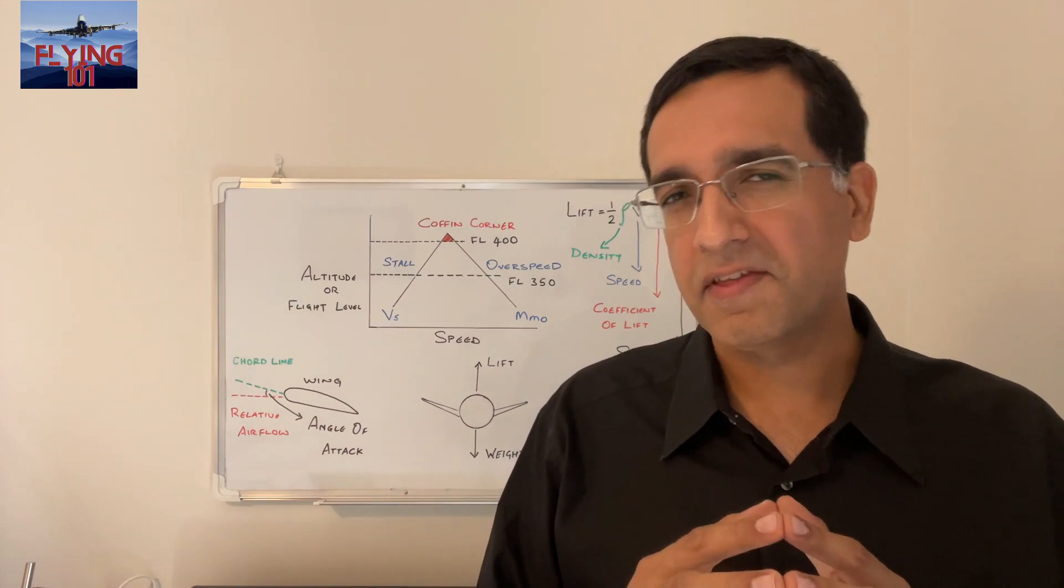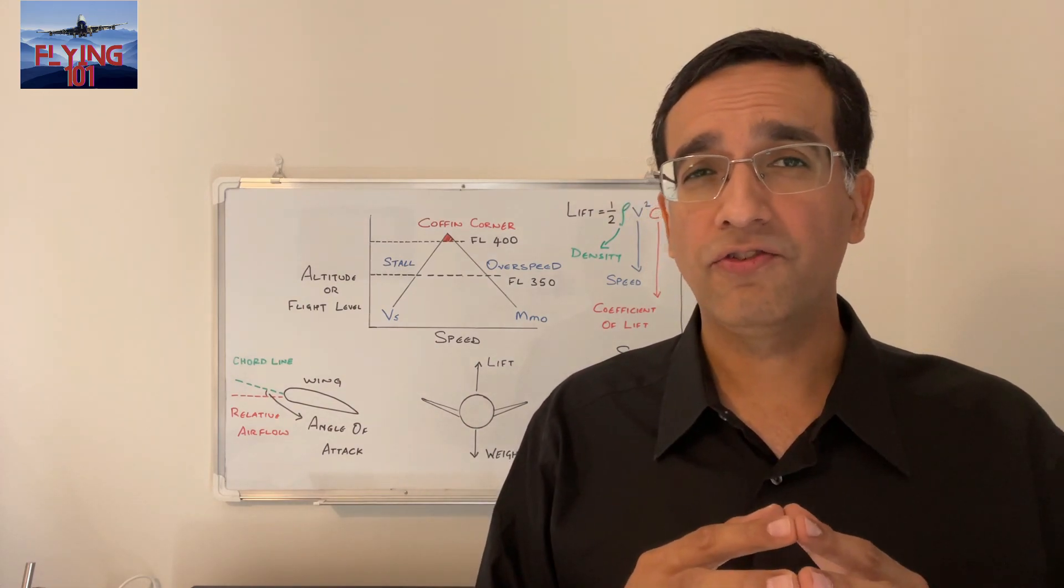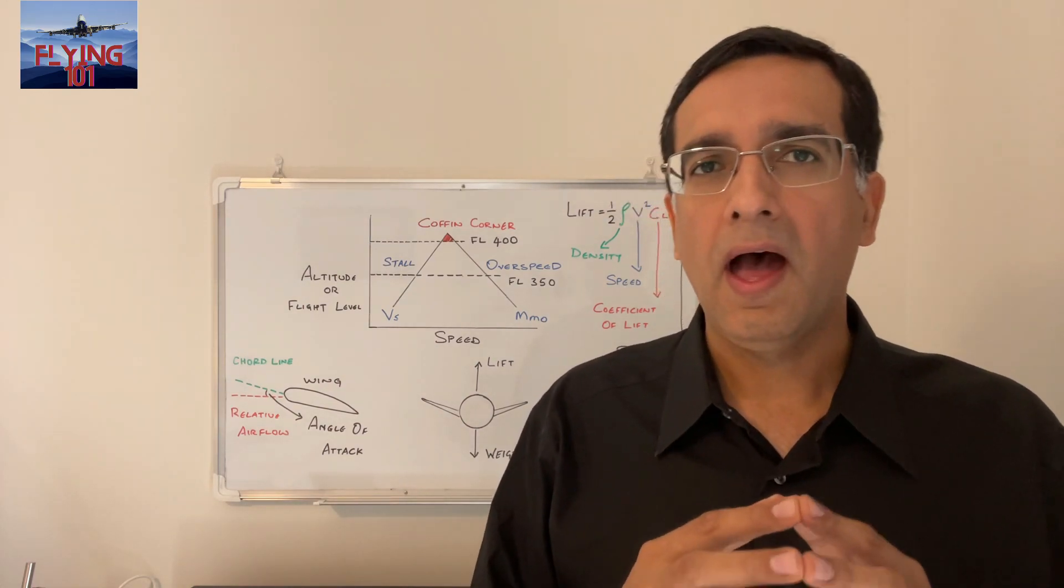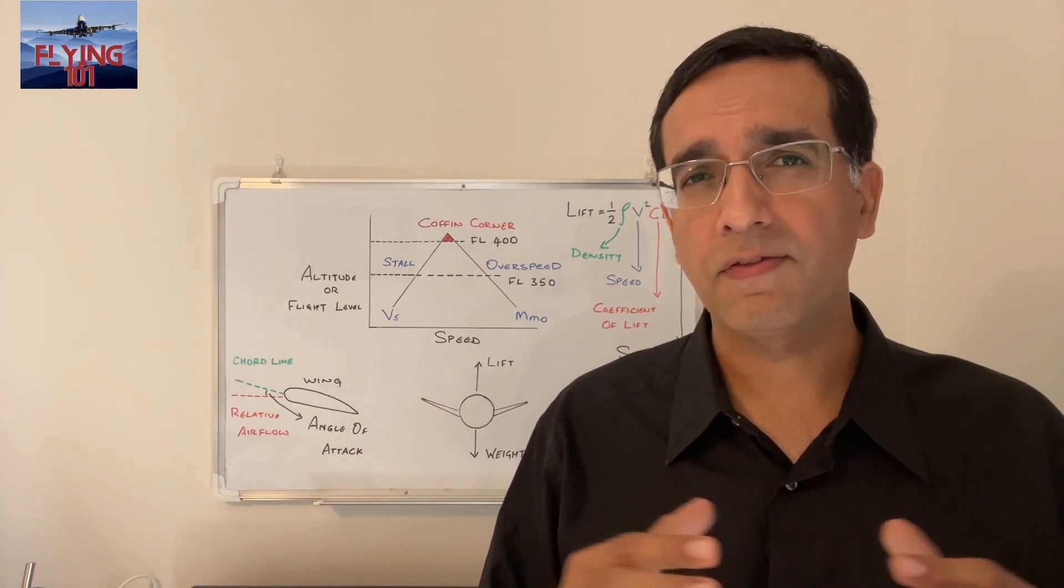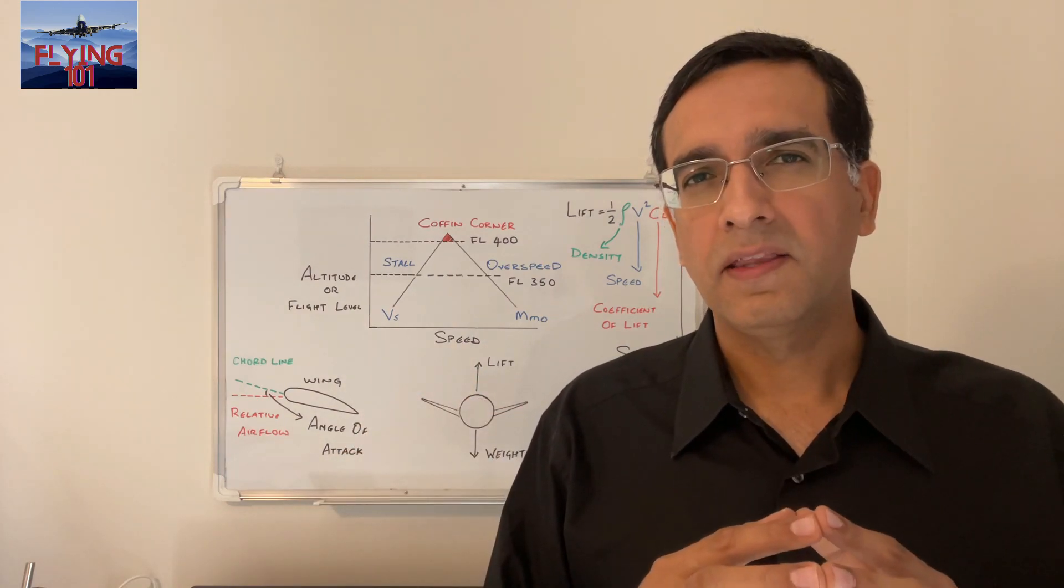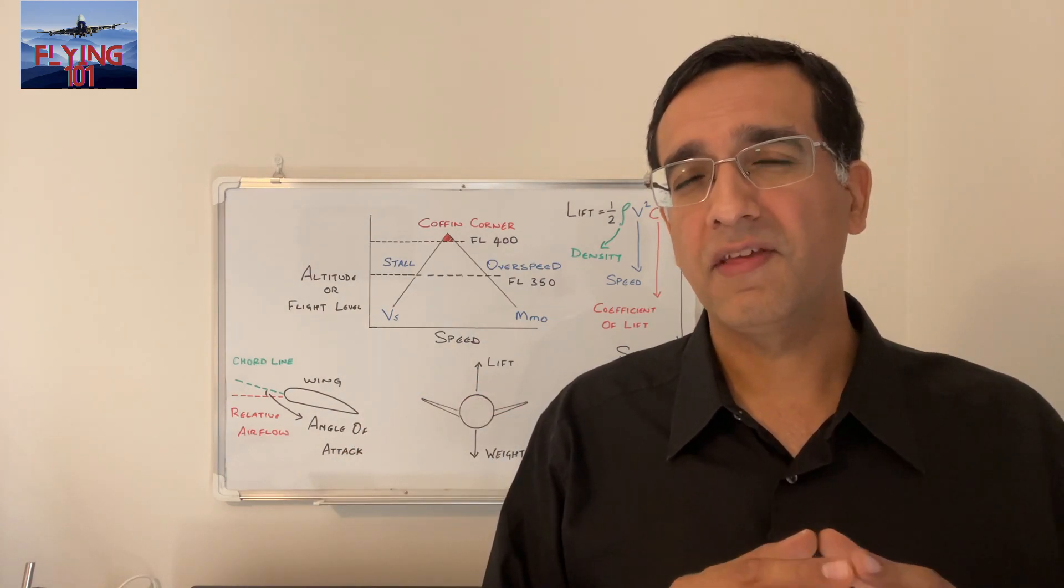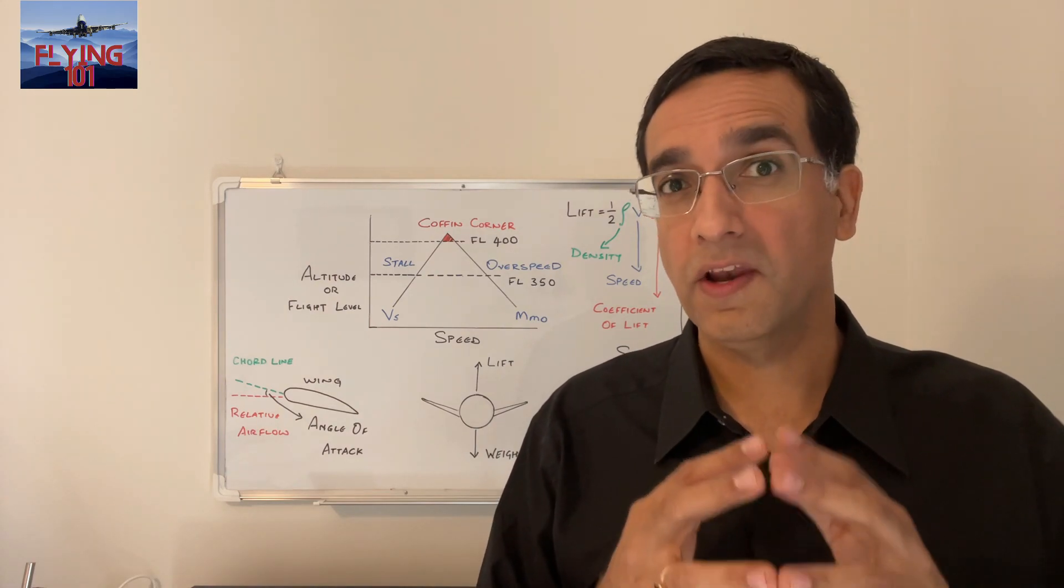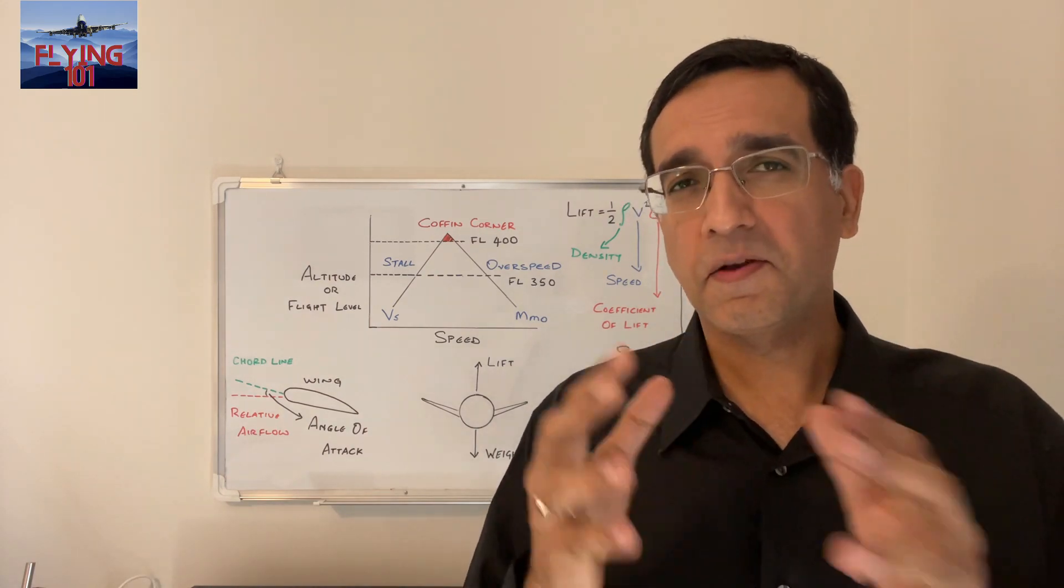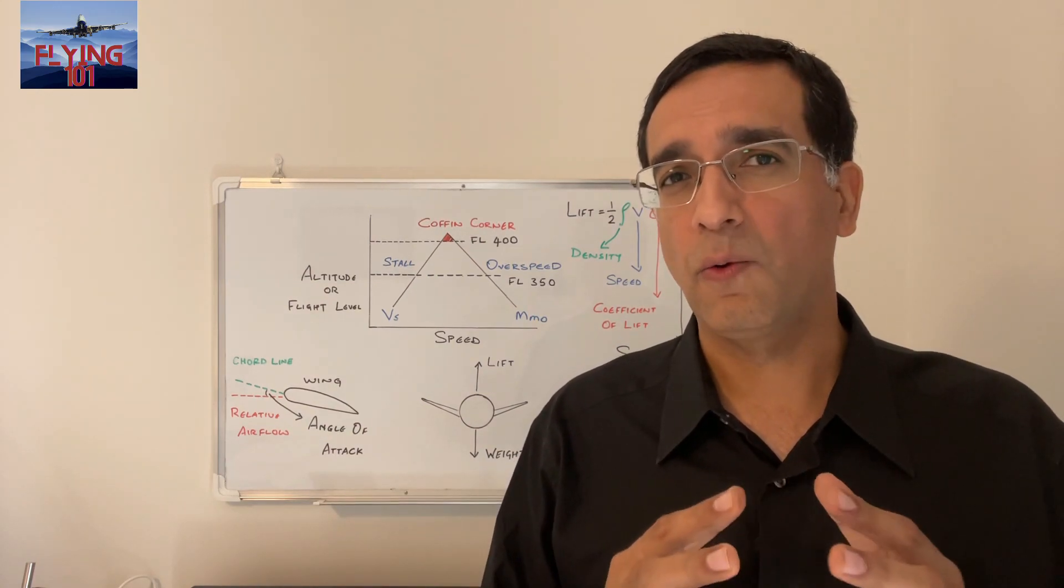Mach number is the percentage of the speed of sound at which the aircraft is flying. And above a certain value it would lead to the creation of shock waves over the wings that would in turn cause a separation of the airflow, thereby having a detrimental effect on lift. This could lead to buffeting and a high speed stall.